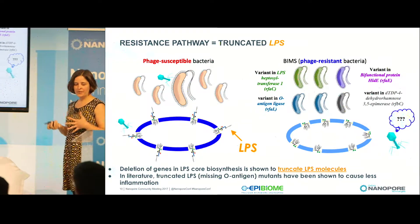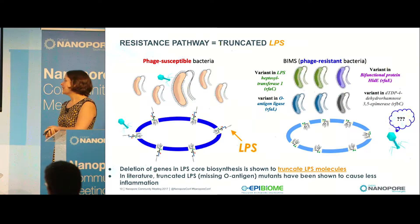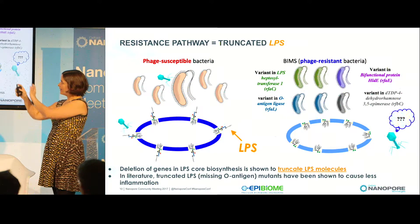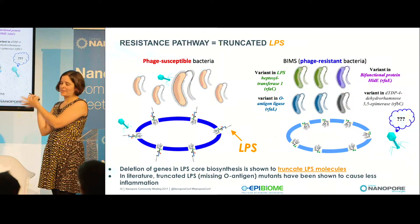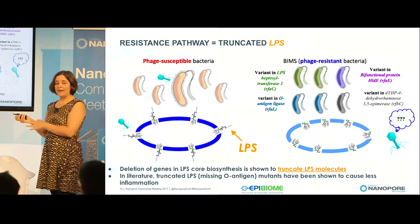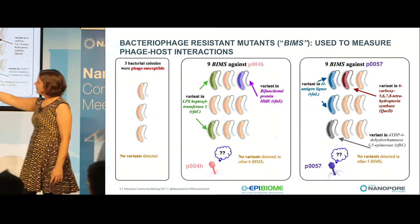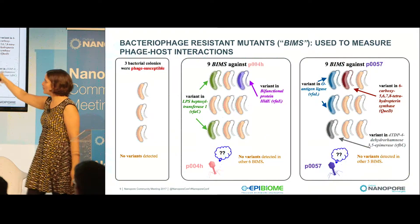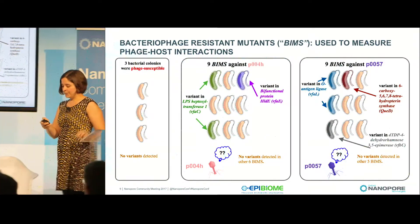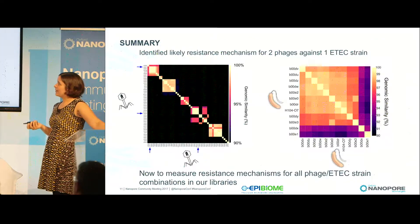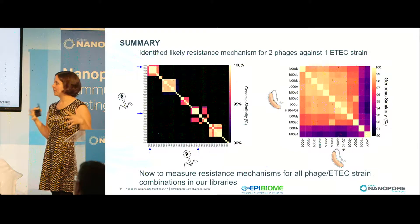We were able to identify the most likely mechanism for how this bacteria is evading these phages. We actually think it's the same mechanism for both, because BIMs resistant to one phage were also resistant to the other phage. That tells us these would not be good phages to put together in a cocktail, because if you become resistant to one, you become resistant to both. We think this is going to be a great tool to guide our cocktail design going forward.